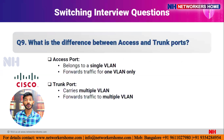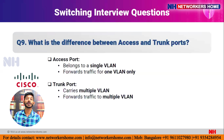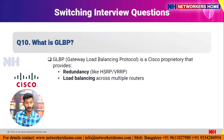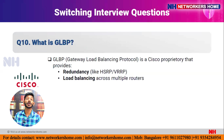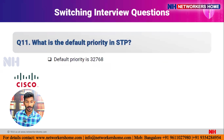Question nine: what is the difference between an access port and a trunk port? An access port belongs to a single VLAN and forwards traffic for only one VLAN. A trunk port carries multiple VLANs and forwards traffic for multiple VLANs. Question ten: what is GLBP? GLBP is a Cisco proprietary protocol that provides redundancy and load balancing. Unlike HSRP and VRRP where only one router is active at a time, in GLBP two routers can be active simultaneously, providing load balancing.